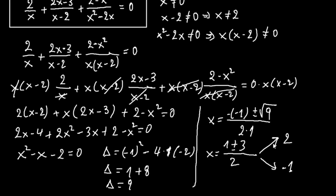Our two solutions are x equals 2 and x equals minus 1. But we established that x must not equal 2, so we must reject that solution. Therefore, x equals minus 1 is the only solution.